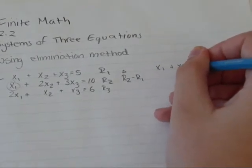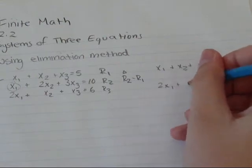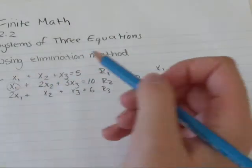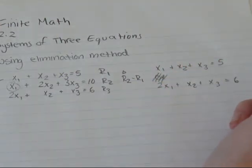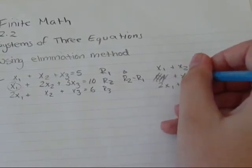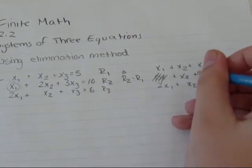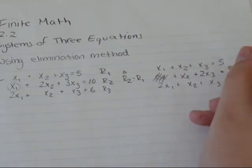x1 plus x2 plus x3 equals 5. 2x1 plus x2 plus x3 equals 6. Now, row 2 minus row 1: x minus x gives me 0x, so that's good. 2x2 minus 1x2 gives me plus x2. And 3x3 minus x3 gives me plus 2x3, and 10 minus 5 equals 5.